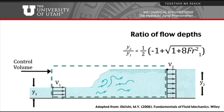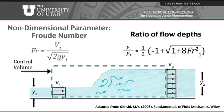The ratio of the heights before and after this jump is dependent on the dimensionless Froude number. This dimensionless parameter represents the ratio of a body's inertial to gravitational forces.